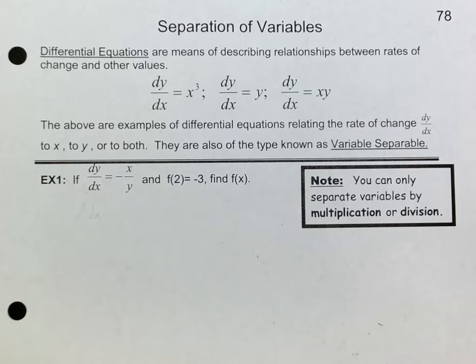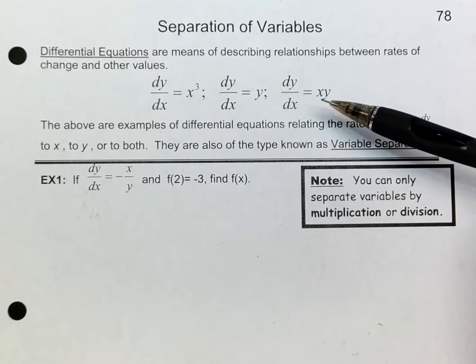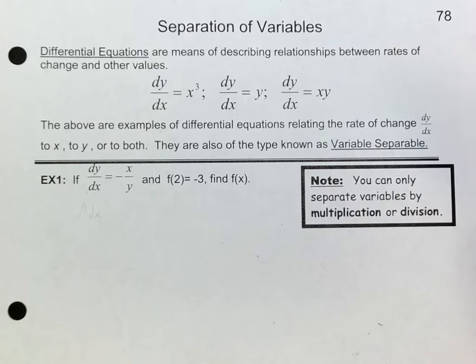This is topic 78, separation of variables. In the past we have done integrals of functions that either have just an x or just a y. But today we're going to take an integral of something that has both an x and a y. This is a little bit more difficult and we're going to use a method called separation of variables.